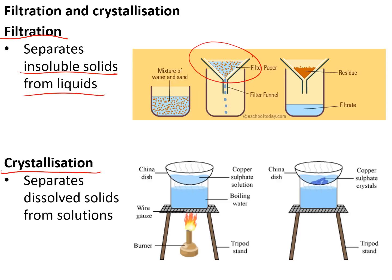Crystallization is used to collect the solid that is dissolved in a liquid. The idea is you put the solution in an evaporating basin, heat it indirectly on a beaker of boiling water. When the solution is reduced by about half, you then leave it in a warm place to dry over a few days.